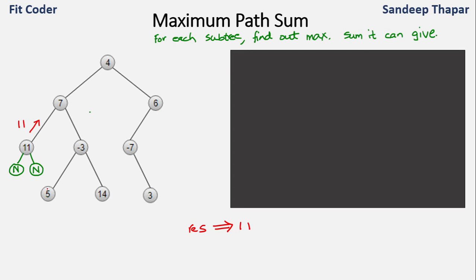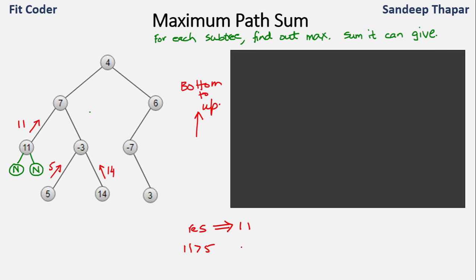We go bottom-up through the tree. For node 5, left and right are null, so its sum is 5 — but 11 is greater, so the result stays 11. For node 14, its sum is 14, which is greater than 11, so we update the result to 14. Now at node minus-3, the left is giving a sum of 5 and the right is giving a sum of 14. So the maximum sum at minus-3 is 5 + (−3) + 14 = 16.